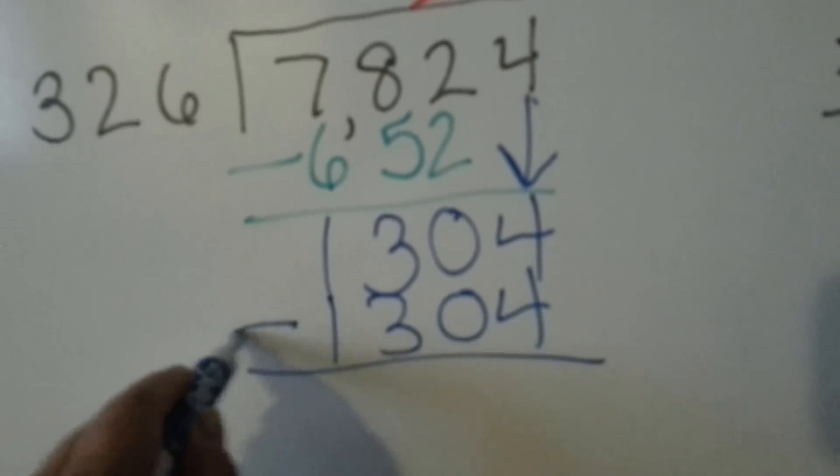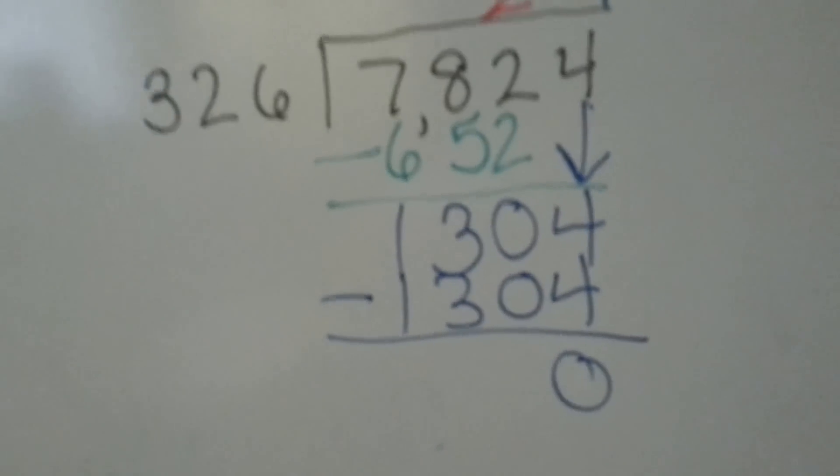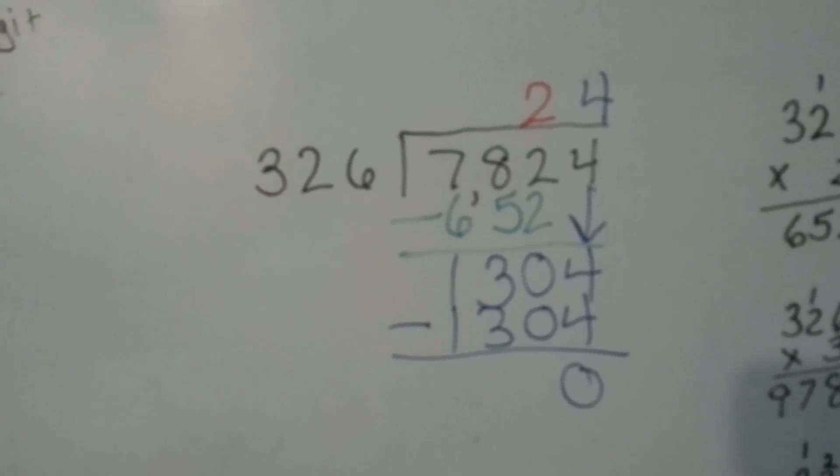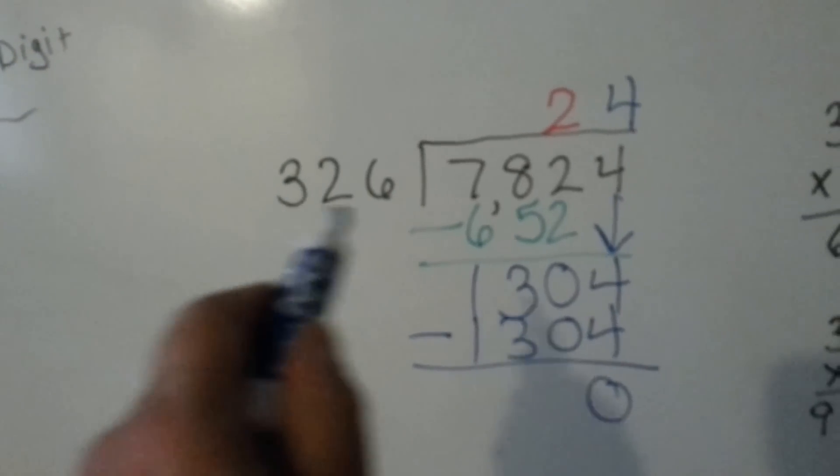So we're doing our below and our subtracting and we get 0. This is no different than the 2 digit number here.